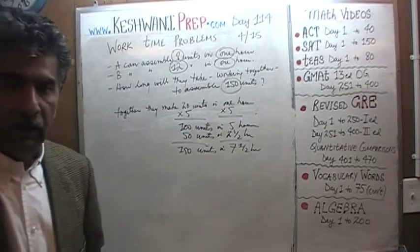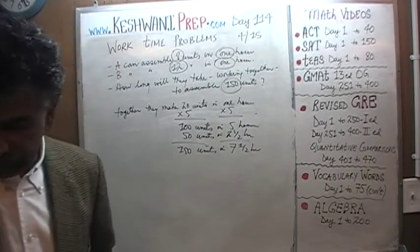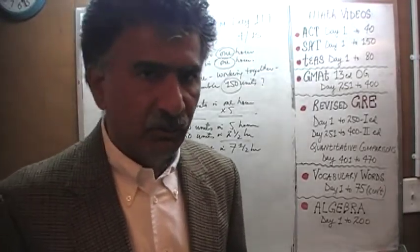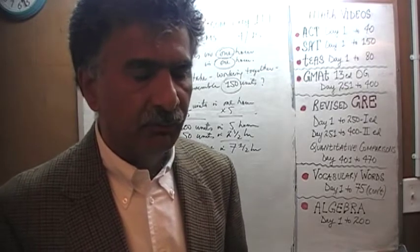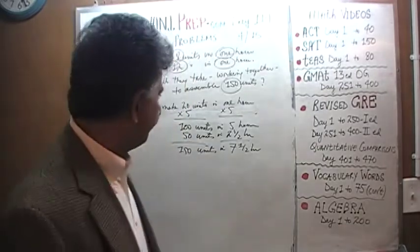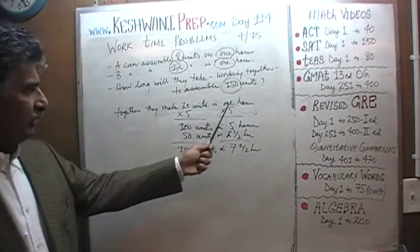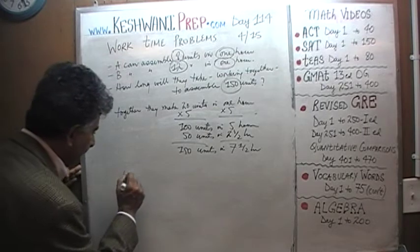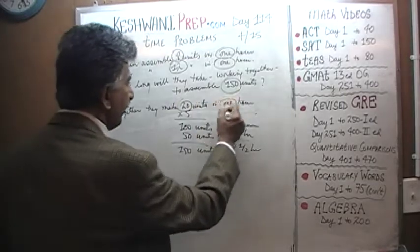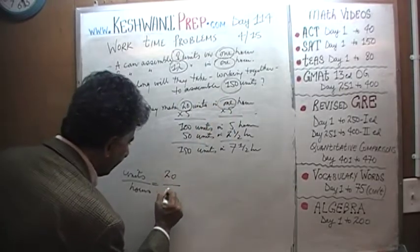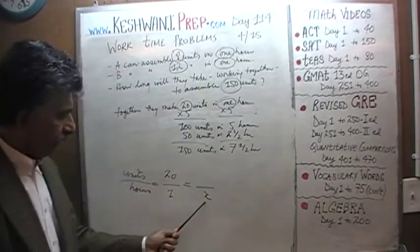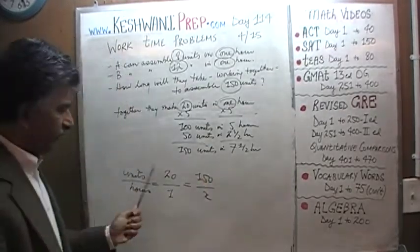That's one way of solving the problem. Another way is more traditional — set it up as a proportion problem. Once we know they're making 20 units in one hour, we set it up as units over hours: 20 units in one hour equals 150 units in x hours.